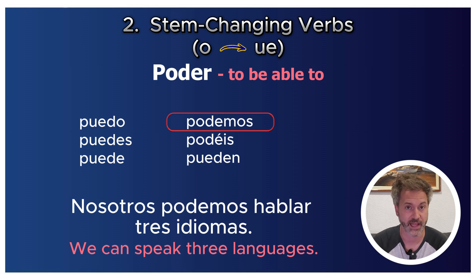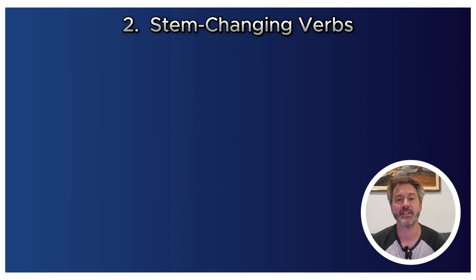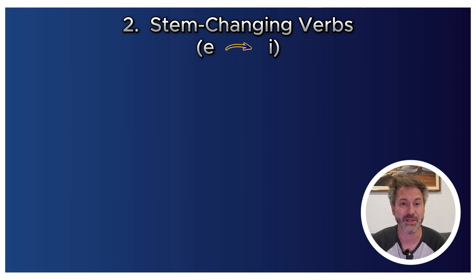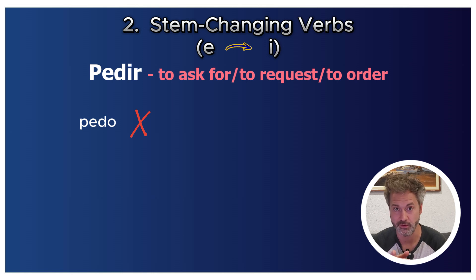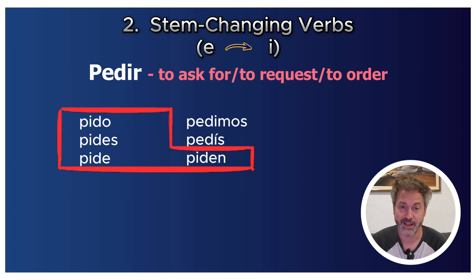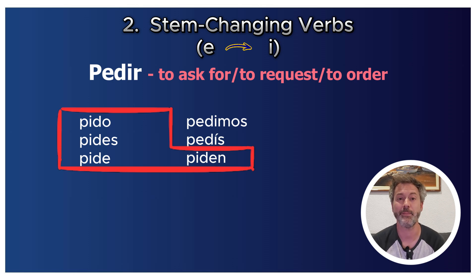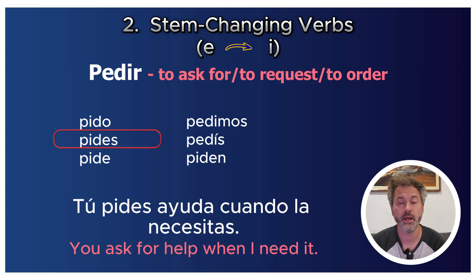The third stem change is E to I. A great example is pedir: instead of 'yo pedo' — and be careful, because pedo in español actually means fart — the E changes to I giving 'yo pido.' Full conjugation: tú pides, él/ella/usted pide, nosotros pedimos, vosotros pedís, ellos/ellas/ustedes piden. For example: 'Tú pides ayuda cuando la necesitas' — You ask for help when you need it.